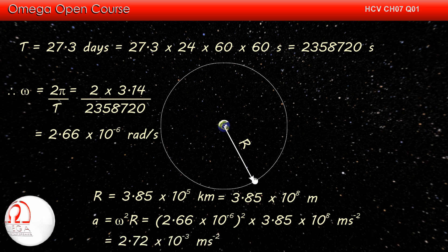Simplifying, we get 2.72 into 10 to the power minus 3 meter per second square. This is our answer.